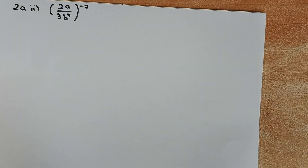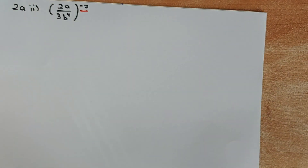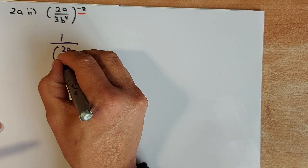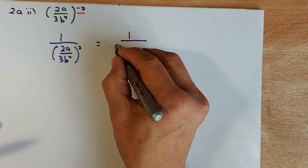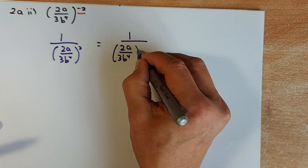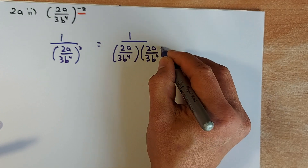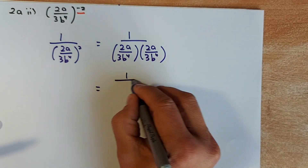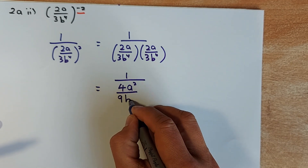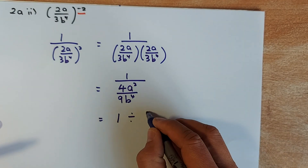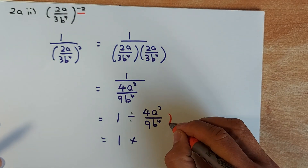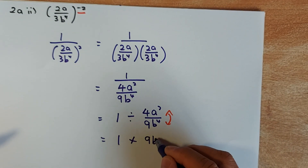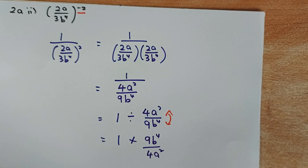Another indices question — this time with a negative index. Whenever you have a negative index, you change it to a positive index by writing it as 1 divided by (2a over 3b⁴) squared. This means 1 over (2a over 3b⁴) multiplied by itself. When you multiply them together it's 1 over 4a squared over 9b⁴. That means 1 divided by (4a squared over 9b⁴). To divide, you change to multiplication and swap the second fraction, giving 9b⁴ over 4a squared. And that is another achieve.